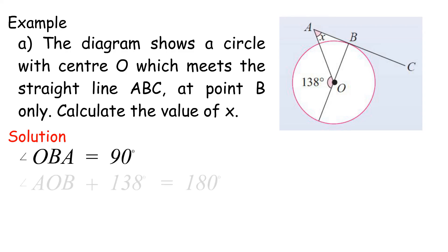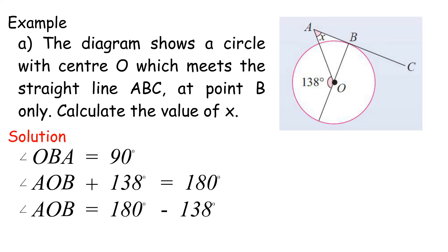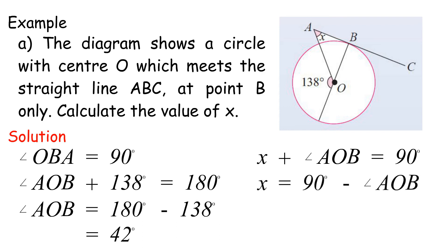Angle AOB plus 138 degrees equals 180 degrees. Angle AOB equals 180 minus 138 degrees, equals 42 degrees. X plus Angle AOB equals 90 degrees. X equals 90 degrees minus Angle AOB, equals 90 minus 42 degrees, equals 48 degrees.